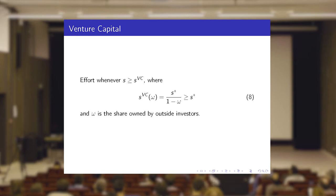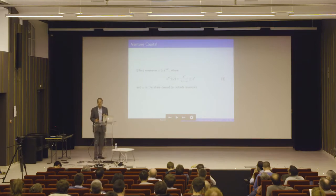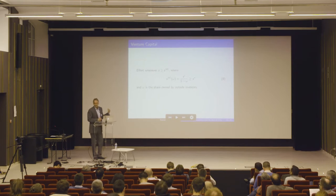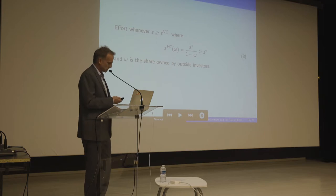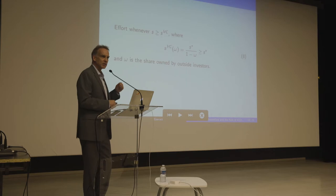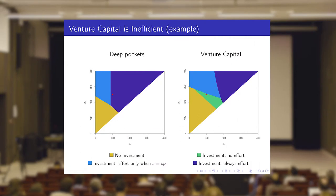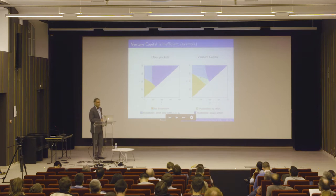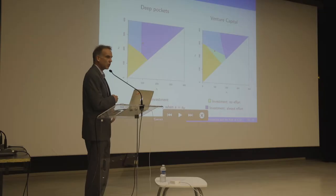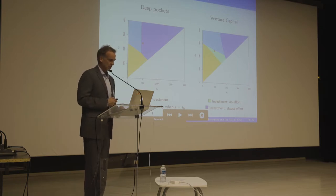With venture capital, someone else gets a share of everything you earn, which reduces your incentive to undertake effort to increase profit. Similarly to the debt case, you need higher sales to justify effort. In this particular example, venture capital is actually the worst: you get investment but never get effort — the green region shows investment with no effort. Deep pockets gives investment and effort always; debt gives investment with effort only in the high-sales state; VC gives investment but effort never.